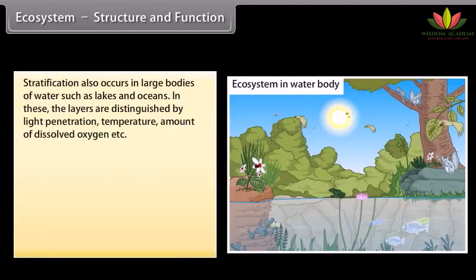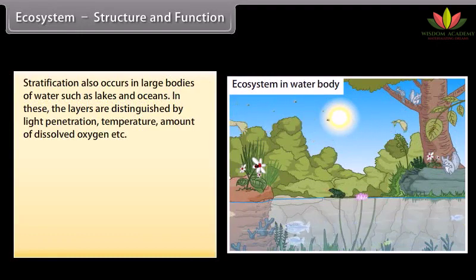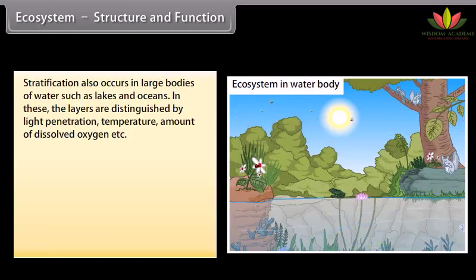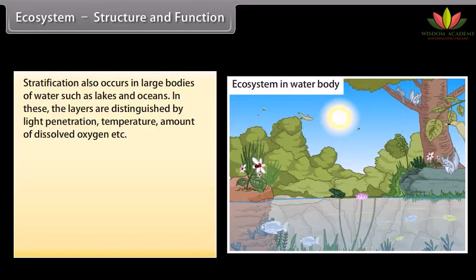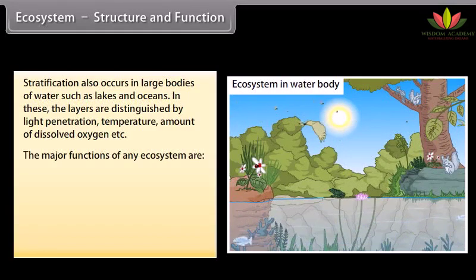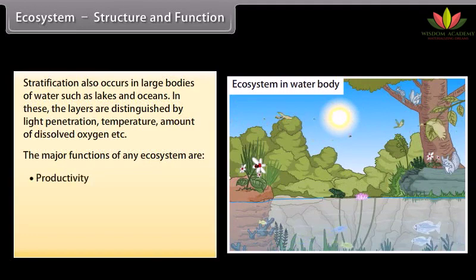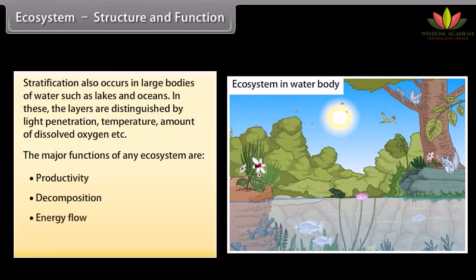Stratification also occurs in large bodies of water such as lakes and oceans. In these, the layers are distinguished by light penetration, temperature, amount of dissolved oxygen, etc. The major functions of an ecosystem are: productivity, decomposition, energy flow, and nutrient cycling.